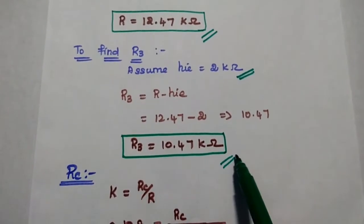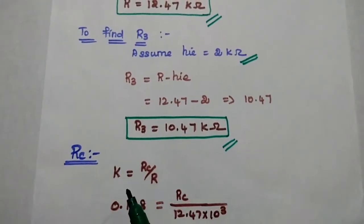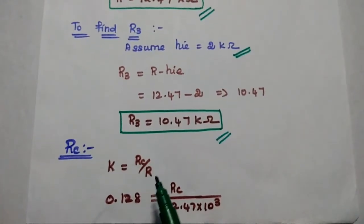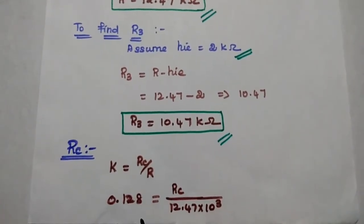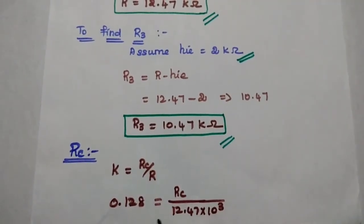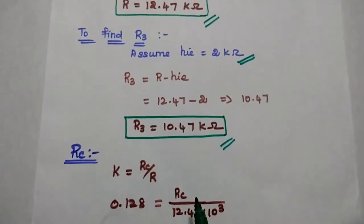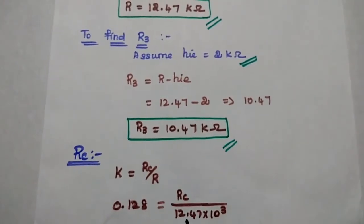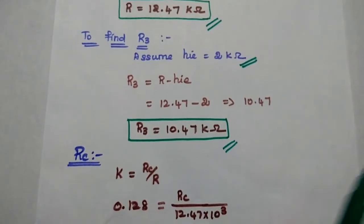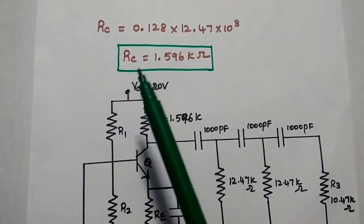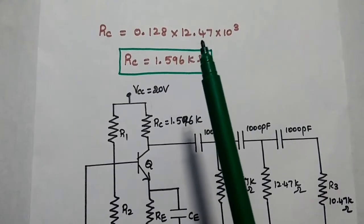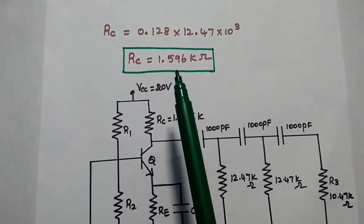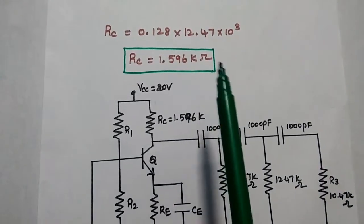Now we find RC using the formula K = RC / R. Substituting K = 0.128 and R = 12.47 kΩ: RC = 0.128 × 12.47 × 10³ = 1.596 kilo ohm.